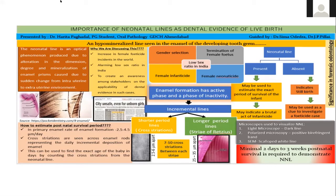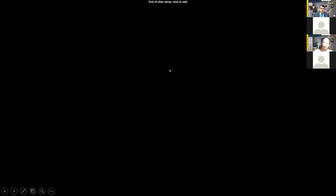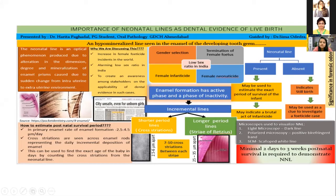How can we differentiate these lines? In light microscopy, it appears as a dark line. In polarized microscopy, there is a positive birefringence band. In scanning electron microscopy, there is a scalloped white line. One drawback is that a minimum of two to three weeks of postnatal survival is required to demonstrate this neonatal line.